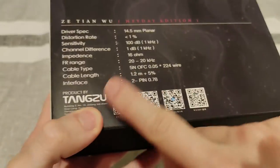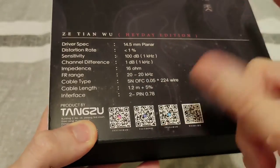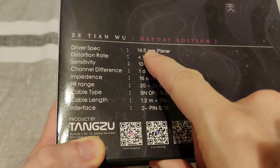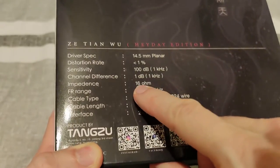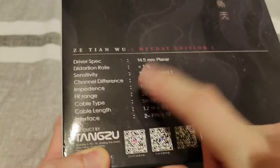There's the brand, specs, some QR code. It's planar so it's a bit harder to power. It's 14.5mm, meant to be an upgraded one over the original. 16 ohm impedance, sensitivity is 100, and there's some information there.